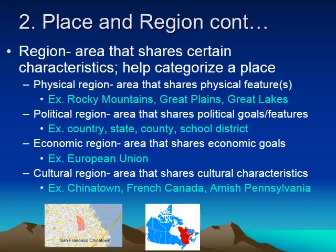Region is another aspect of element two, and it describes what characteristics places share with other places — it helps categorize a place and tell us what places have in common. There are four types of regions. The first is a physical region, which is an area that shares physical features. A great example would be the Rocky Mountains, or the Great Lakes states, which are all states bordering the Great Lakes. We don't have to mention every single one individually.